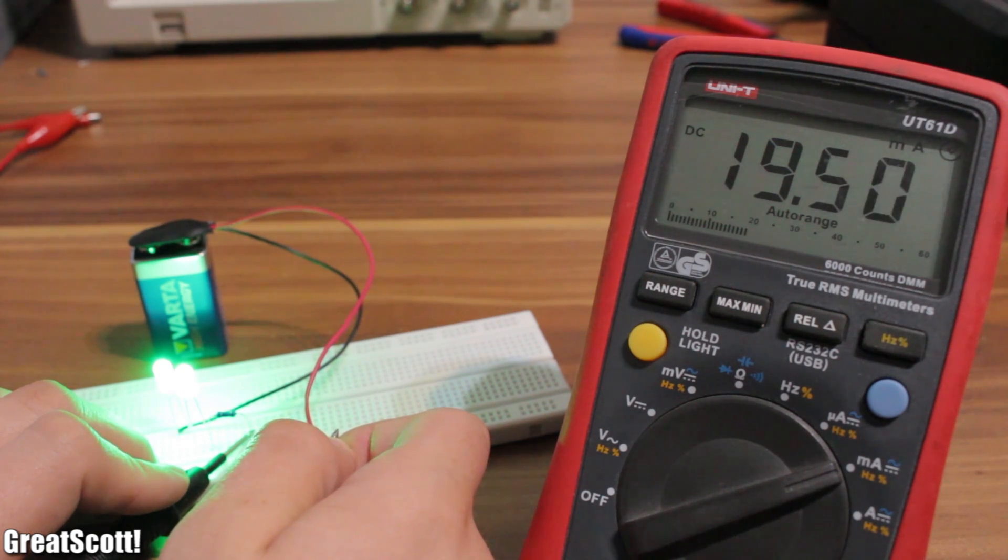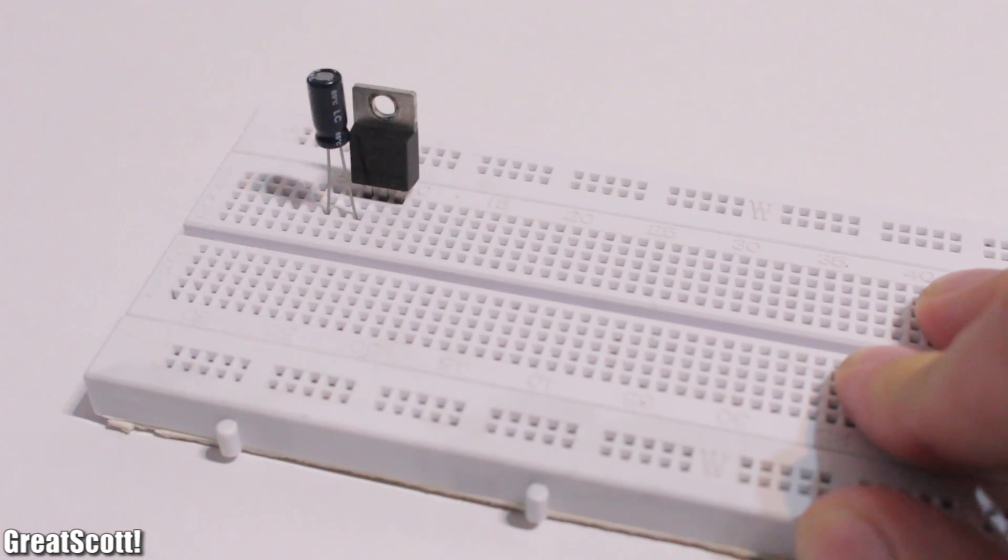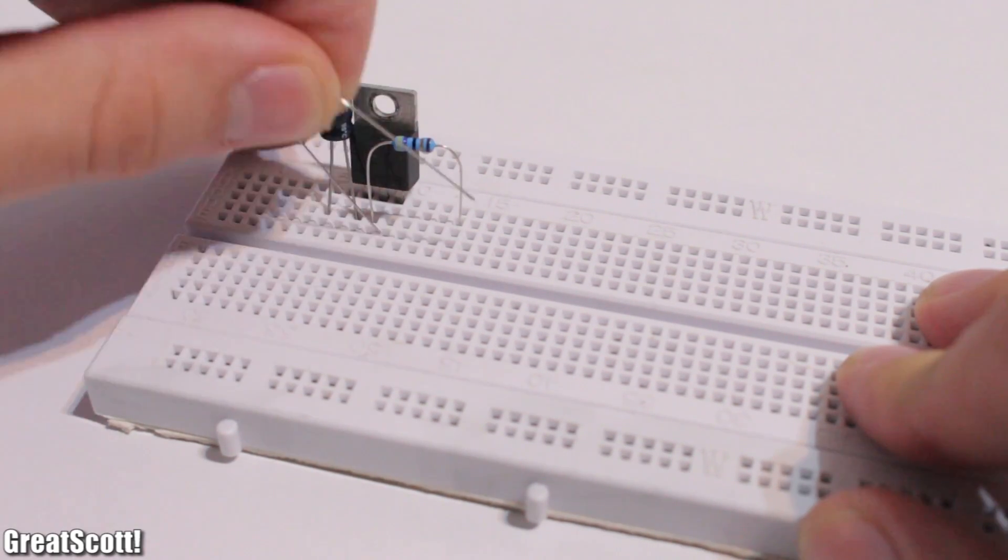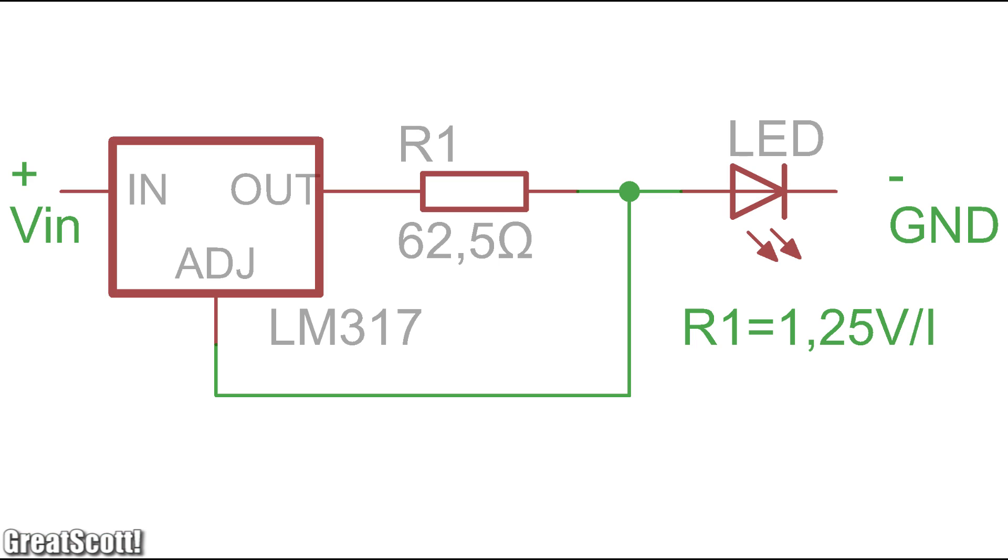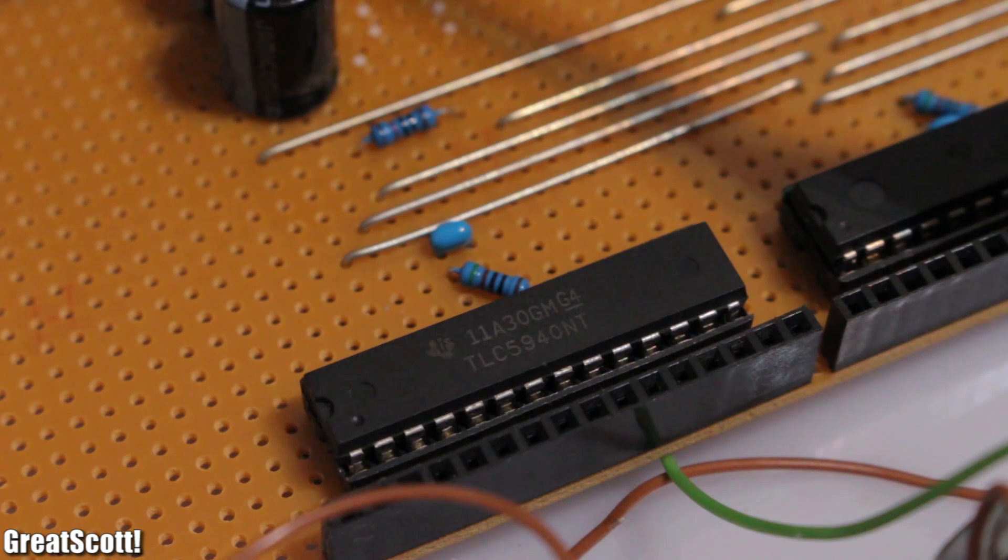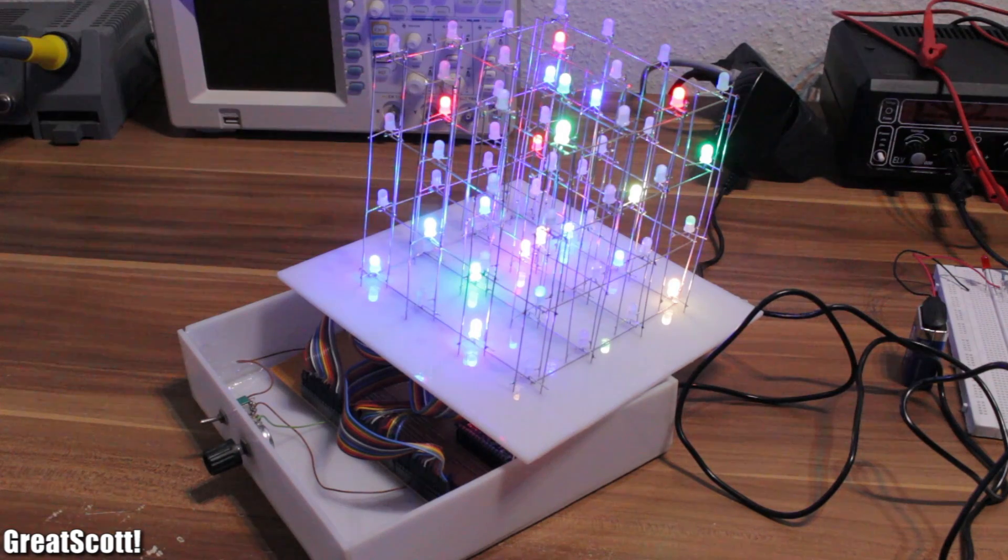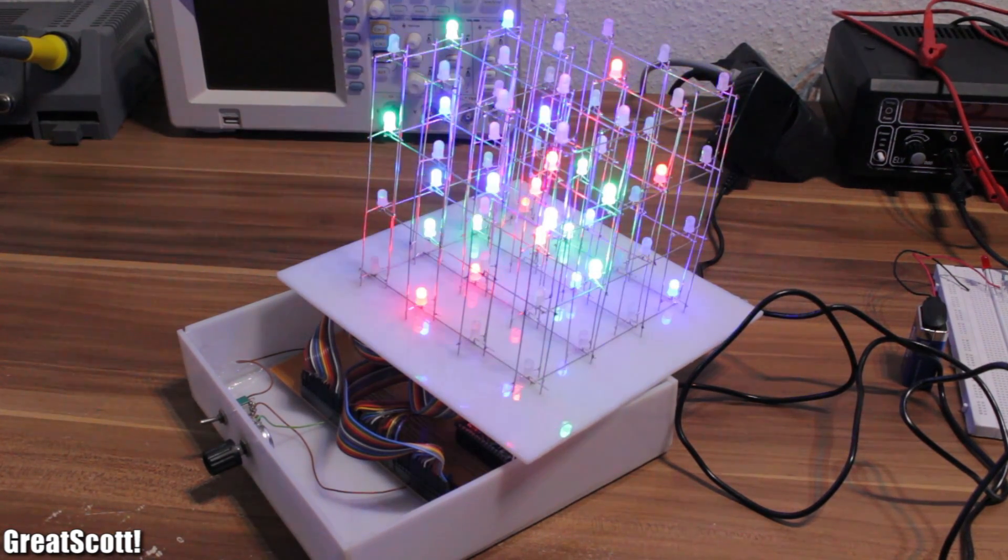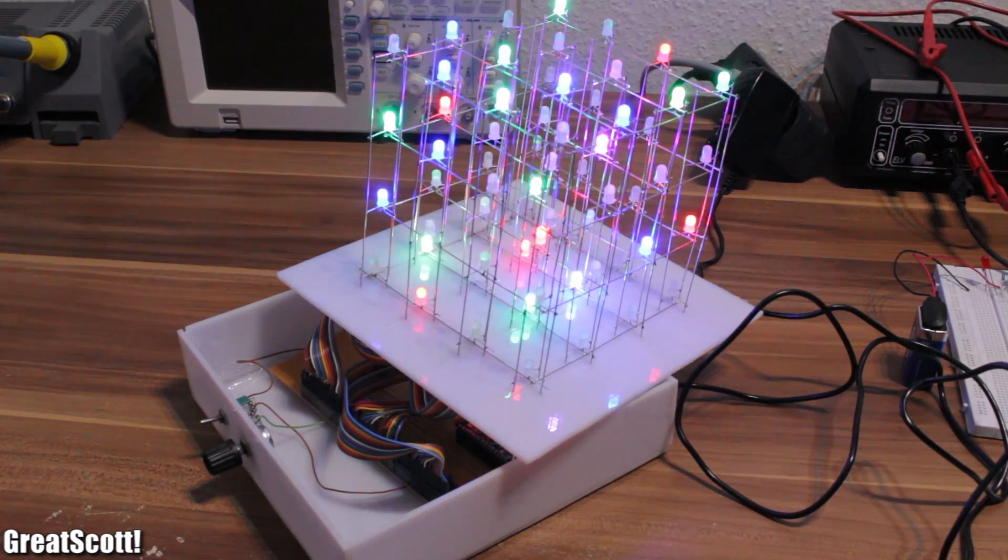You can build a simple constant current source with an LM317 and a resistor. Here's the schematic. Even though this works, the efficiency is quite horrible. The TLC5940 is also a popular example of a constant current driver, but this will be a subject in another video.